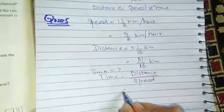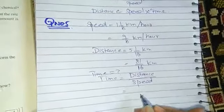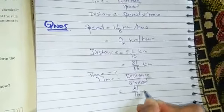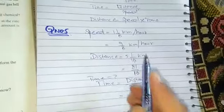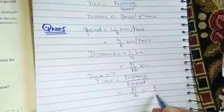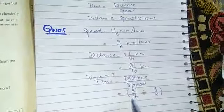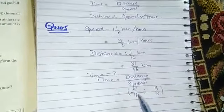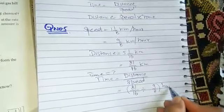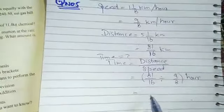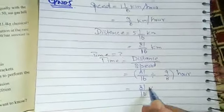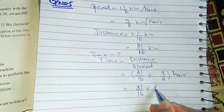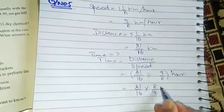By putting values, distance is 81 over 16 divided by speed, that is 9 over 8. If we write the units, then km will cancel out with km and our answer becomes in hours. So we convert the division into multiplication, it becomes 8 over 9.